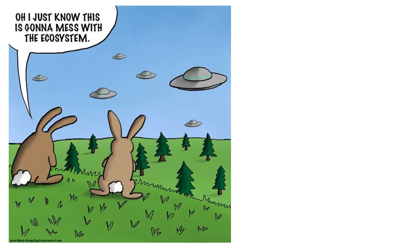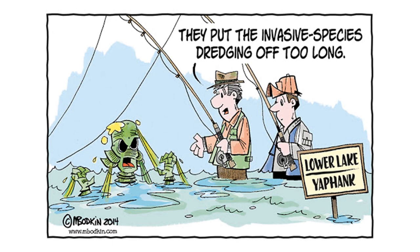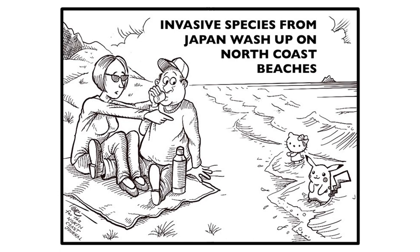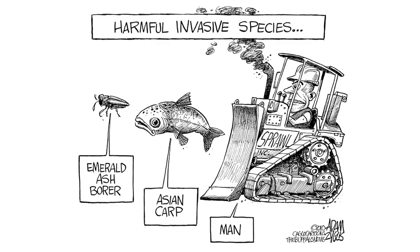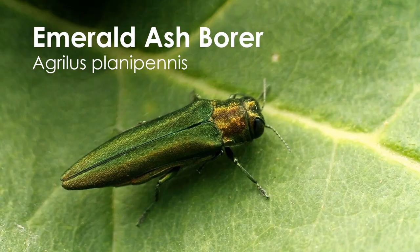The invaders disrupt and dominate their new homes because nothing is there that is capable of stopping them. Once a species successfully invades a place, it is extremely difficult, if not impossible, to remove it. Two of the most common pests in the United States are the Emerald Ash Borer and Asian Carp. The Emerald Ash Borer is a green beetle native to Northeastern Asia. It was first observed in North America in Canton, Michigan in 2002, but may have been brought to the U.S. as far back as the 1980s in shipping materials and packing crates.